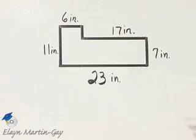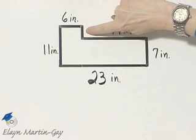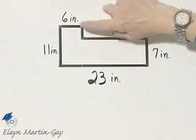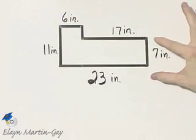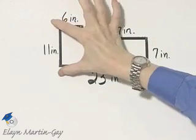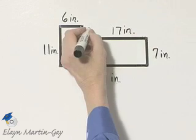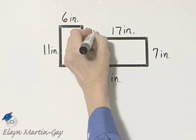23 minus 6 is 17, so this is 17 inches. And then let's find one more length of this segment. This is 11 inches. This is 7 inches. 11 minus 7 leaves 4 inches.